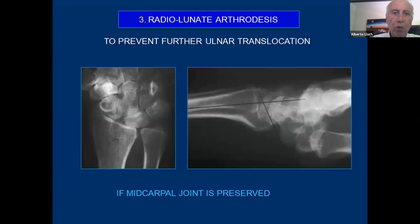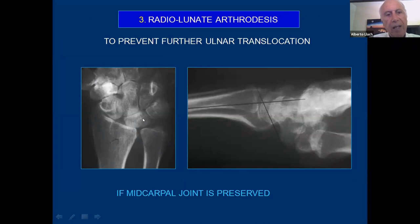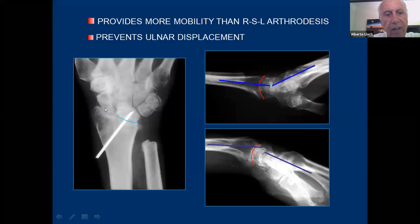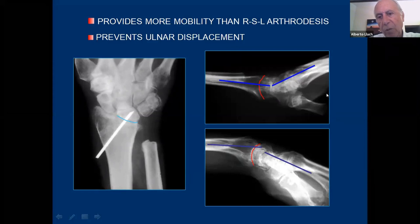What about the radiolunate arthrodesis? I think it's also a great operation, described by Andrea Chamay, because it will prevent ulnar translocation of the wrist. It produces better wrist function than a radioscapholunate arthrodesis and is much easier to perform. Several years after radiolunate arthrodesis, we see the lunate fixed to the radius — but the patient has a relatively functional mobility of approximately 20 degrees of wrist extension and 20 degrees of wrist flexion.